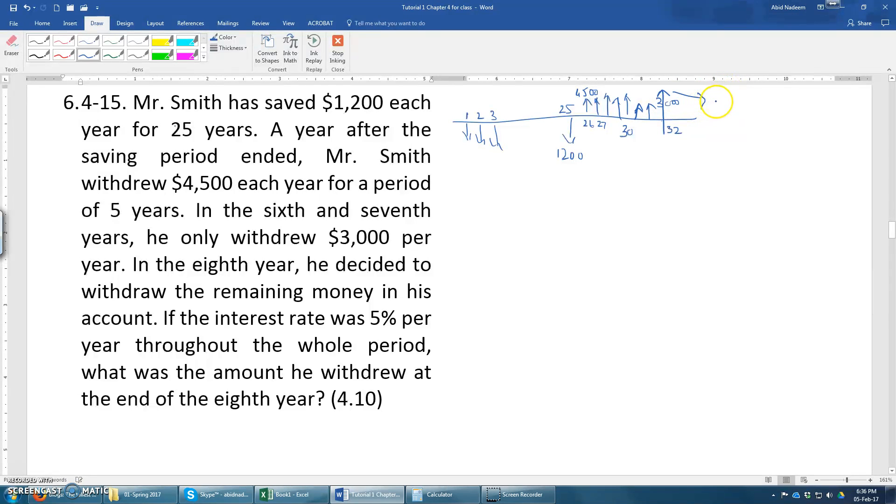So here we can see that we can establish an equation. So if I want to find this remaining amount F, then F will be equal to the accumulated sum of this $1,200 each year for 25 years.